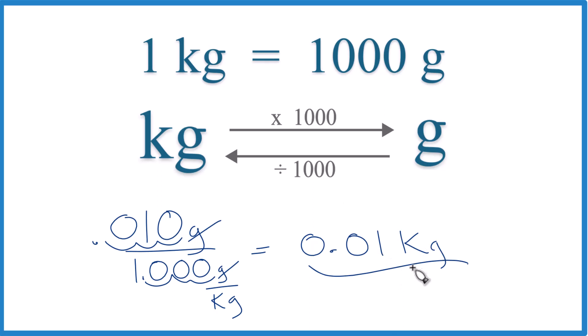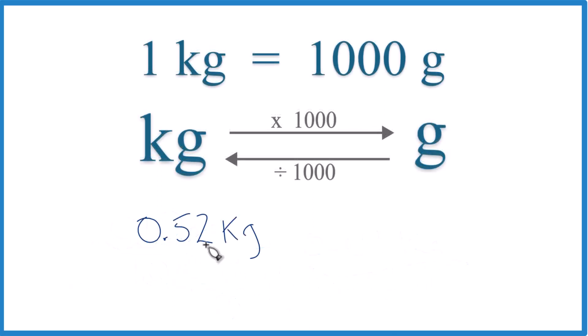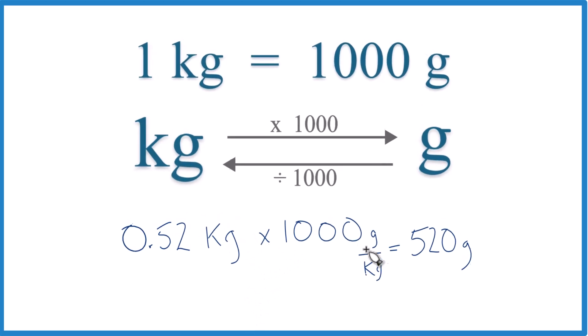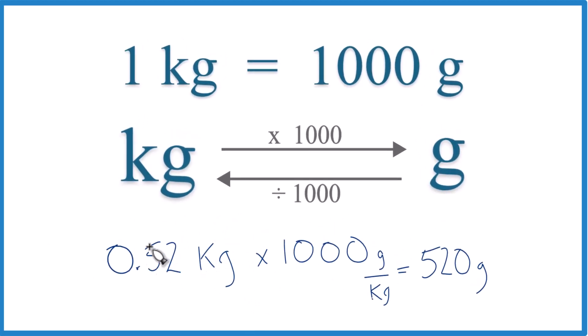Okay. So one more. Pause and do this one. Convert 0.52 kilograms to grams. So since we're multiplying by 1,000, you could just move the decimal place to the right, 1, 2, 3. So we'd have to put a 0 there. And we'd end up with 520 grams in 0.52 kilograms.